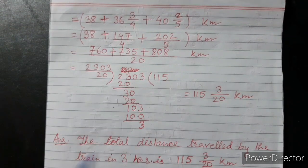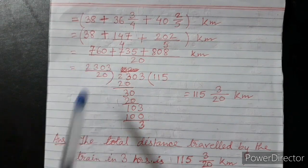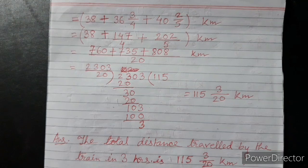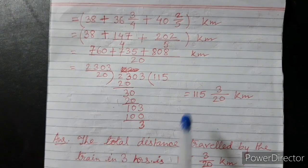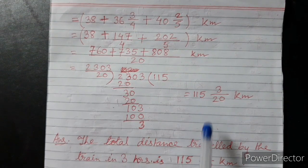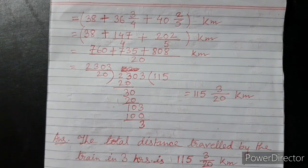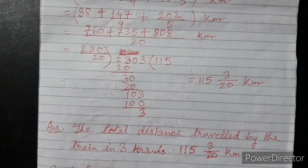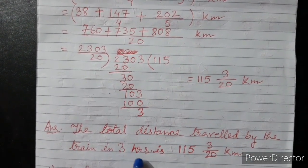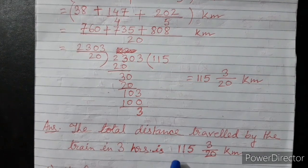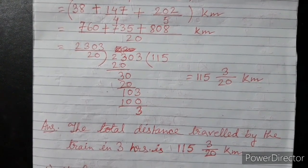Ab add karo, toh aya 2303 divided by 20. Ab phir se mix fraction kar do, toh aya 115 and 3/20 kilometer. So, the total distance travelled by the train in 3 hours is 115 and 3/20 kilometer.